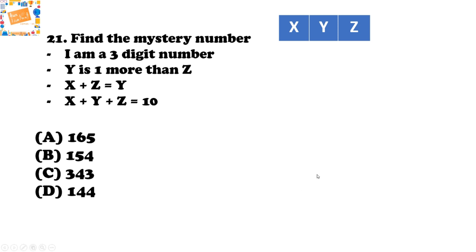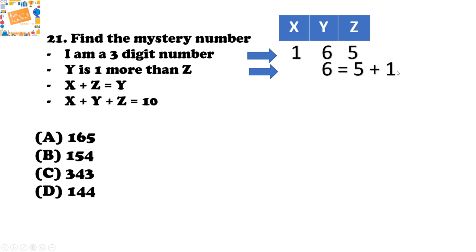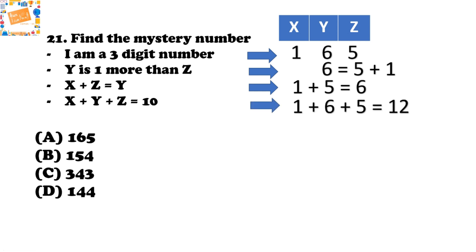Let's validate each option against the conditions. For option A, 165: Y is 6 and Z is 5 — yes, Y is one more than Z. X plus Z equals 1 plus 5 equals 6, which equals Y — good. But X plus Y plus Z equals 1 plus 6 plus 5 equals 12, not 10. So the last condition is not satisfied, and option A is incorrect.